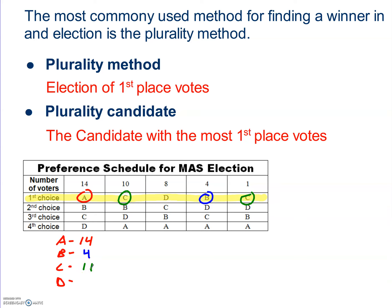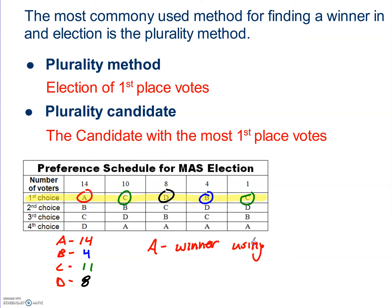Candidate D, right in the middle, has eight total first place votes. So who is the winner of this election? Simply, A is the winner using plurality. Candidate A is the plurality winner, and that's really all there is to the plurality method.